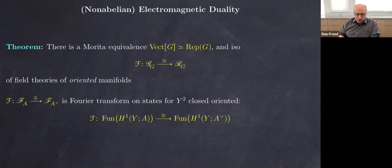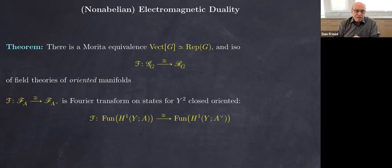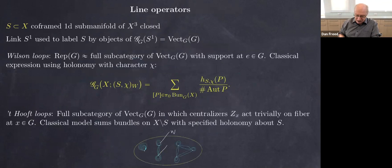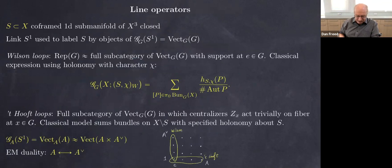As Juven said, this three-dimensional theory in the abelian case enjoys electromagnetic duality — it's a finite version of the usual electromagnetic duality in Maxwell theory, which happens in four not three spacetime dimensions. In these gauge theories there are natural operations where you have an embedded one-dimensional sub-manifold — called Wilson and 't Hooft loops. These are exchanged under electromagnetic duality, and these kinds of operators are parametrized by the same groupoid G mod G.